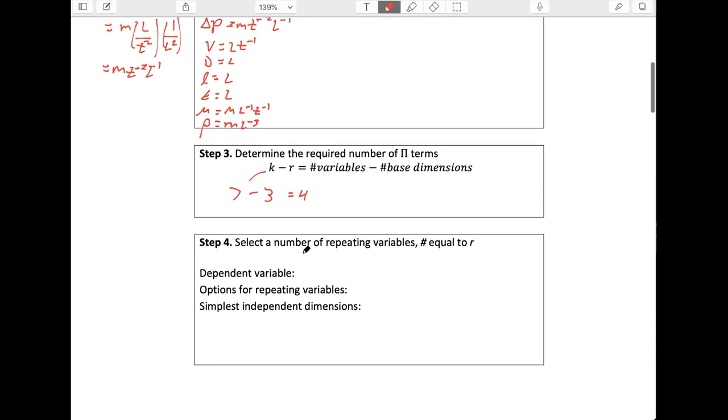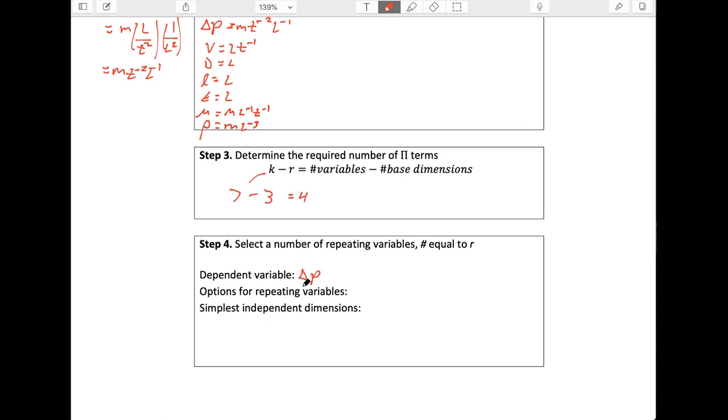Now we've got to work on our repeating variables. We don't want to use our dependent variable delta P. And so that leaves all the rest of them as candidates. We could use V, D, length, epsilon, viscosity, or density. What we're going to do is pick them in a way that they represent the whole range of base dimensions without being multiples of each other. And so I propose that we use diameter to capture our length. Let's use velocity to bring in the time. And let's use density to bring in the mass. So those are our repeating variables. And we'll be left then with one, two, three, four non-repeating variables that are going to go into our four pi terms.